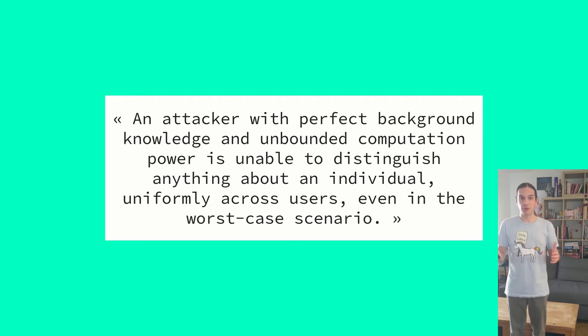We mentioned two of these dimensions already. We found seven in total. So, to give a human-speak version of these dimensions, here is a quite verbose formulation of the guarantee that's offered by differential privacy. An attacker, who has perfect background knowledge except on their target, and unbounded computation power, is unable to distinguish anything about the individual, uniformly across users, even in the worst case scenario.